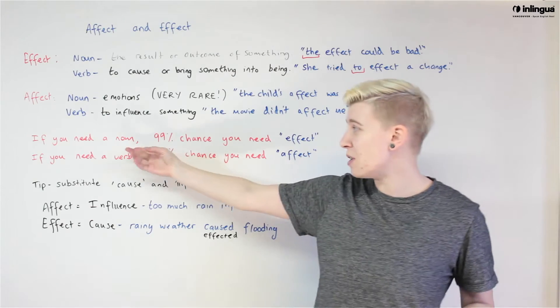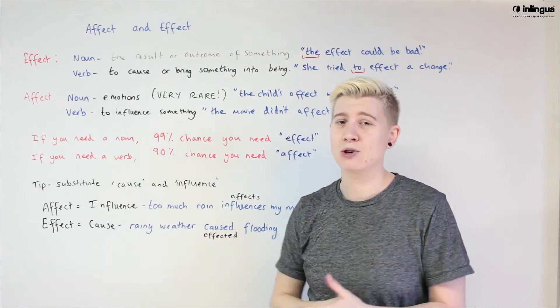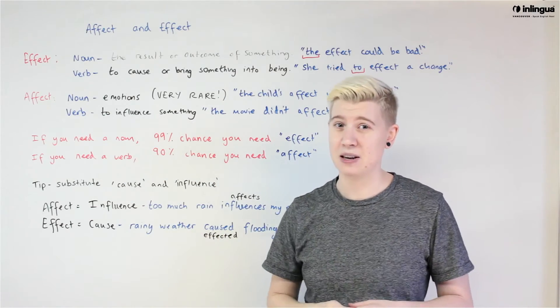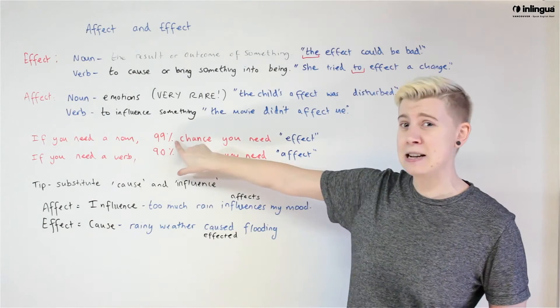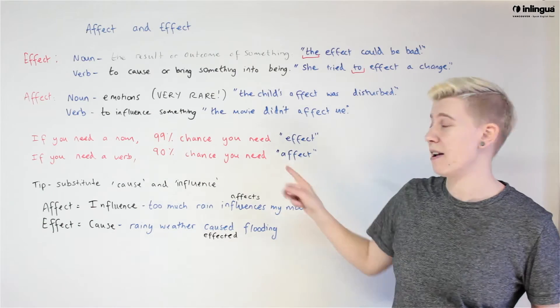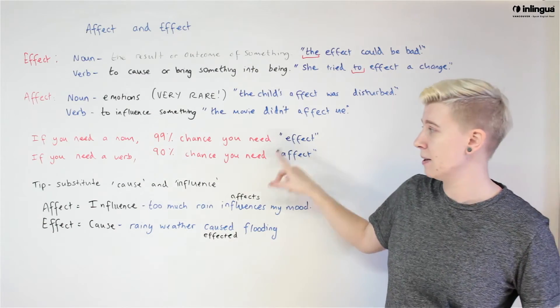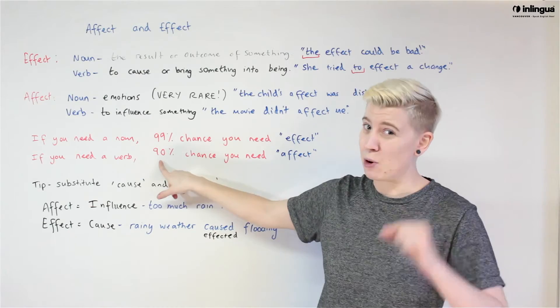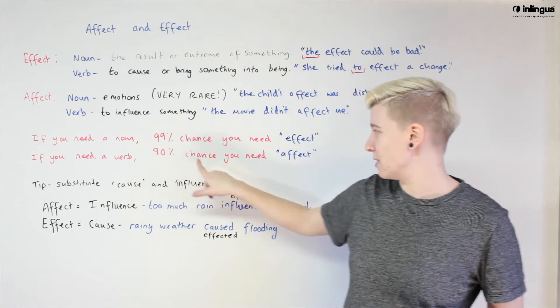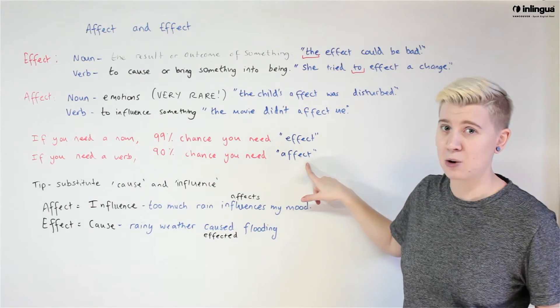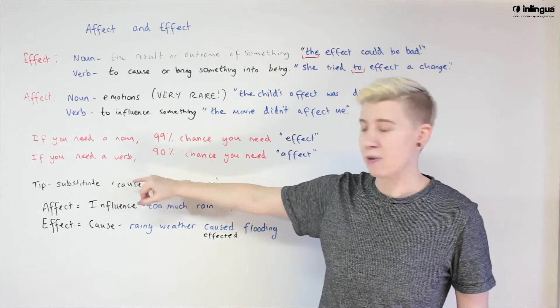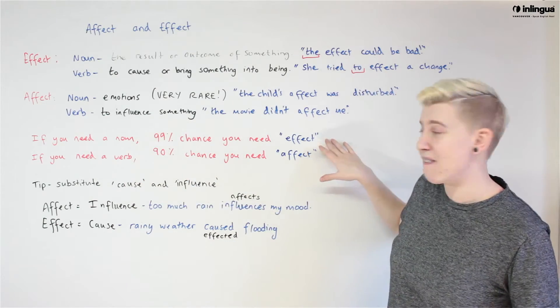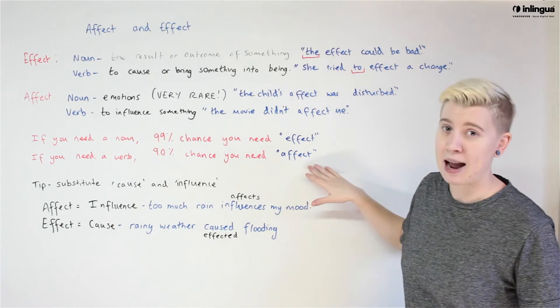Okay so if you need a noun in your sentence, if you need a noun there is a 99% chance that you need effect with an E and if you need a verb there is a 90% chance that you need affect with an A. So a good rule of thumb is to remember this way: Nouns you're going to use effect, verbs going to use affect.